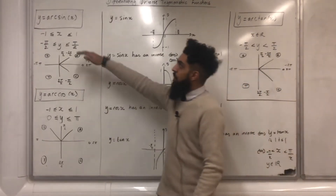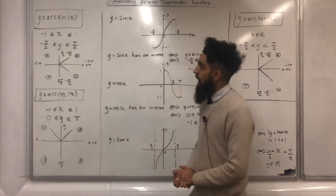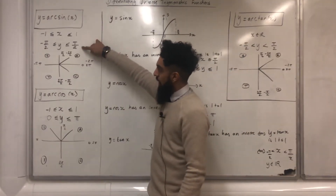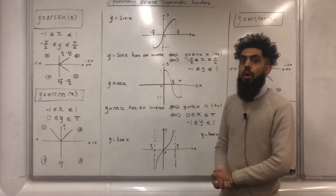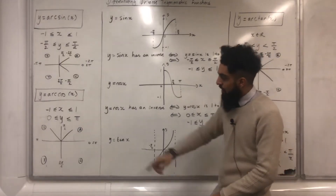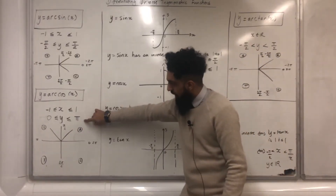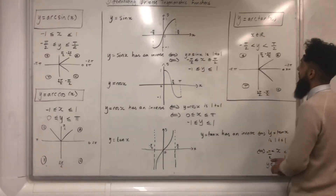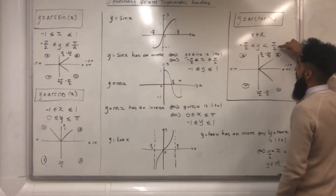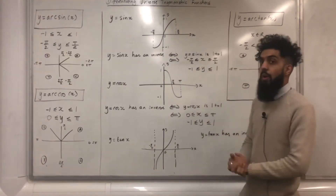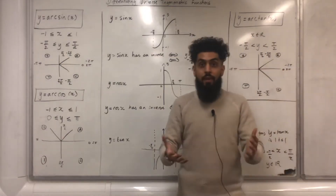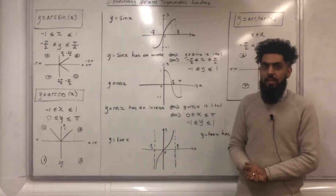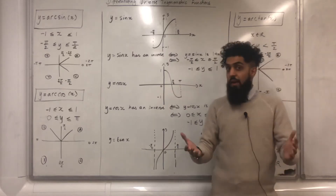Starting with y equals arc sine x, the domain and range are given by swapping those of sine x. Next, y equals arc cos x — the domain and range follow similarly. Third, y equals arc tan x — the domain and range are given accordingly. You need to know the domain and range of the inverse trigonometric functions when differentiating them, so it's very important.